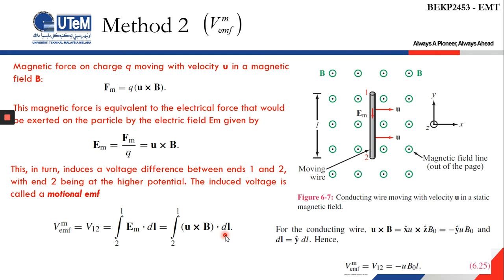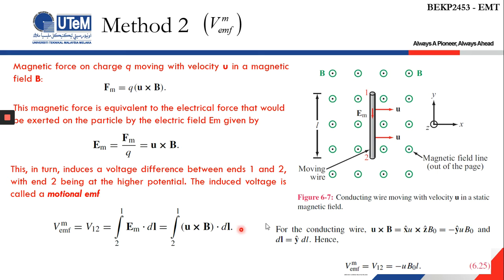For the conducting wire, u cross B: the velocity is in the x direction with magnitude u, and B is in the positive z direction with magnitude B0. Taking x cross z gives the direction negative y, with magnitude uB0. So the motional EMF between points 1 and 2 is negative uB0l.